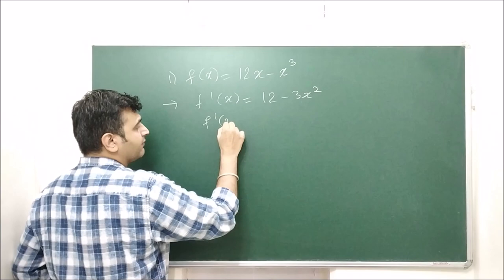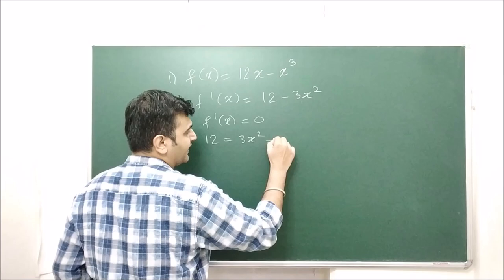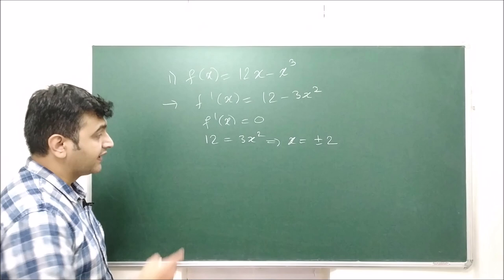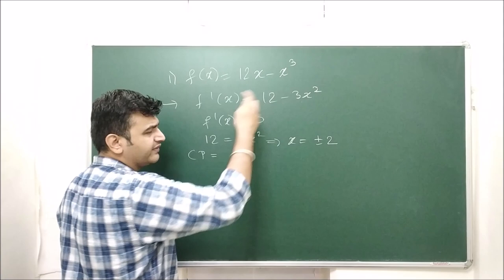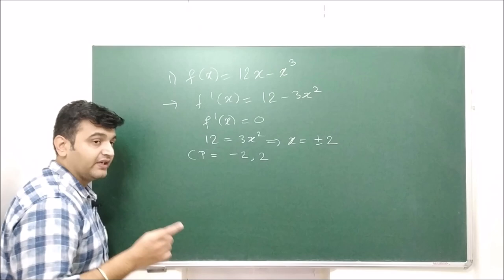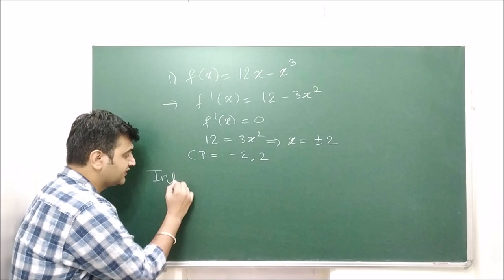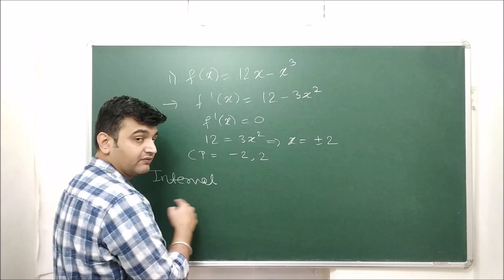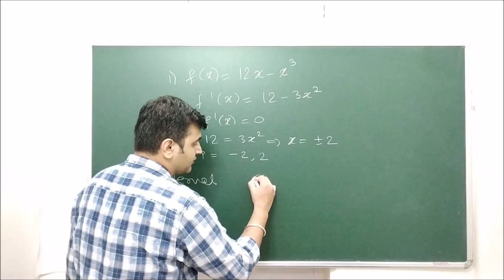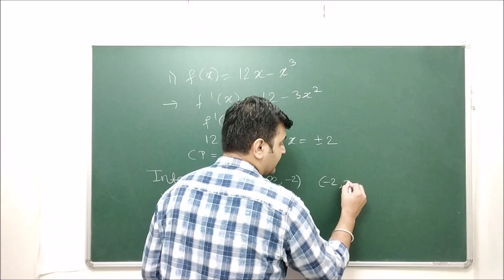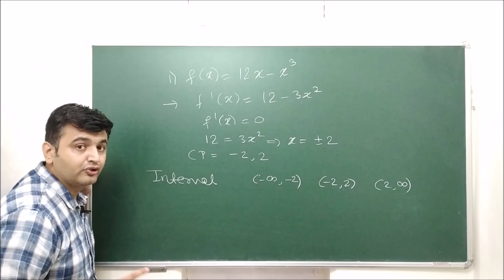To find the critical points, find the derivative of the function, which in this case is 12 minus 3x². Set the derivative equal to zero: 12 = 3x², so x² = 4, giving x = ±2. Since the function is a polynomial it is defined everywhere, so the critical points are x = minus 2 and x = 2. Now whenever you want to find the intervals of increase and decrease, I suggest you always draw a table — it will always help you.